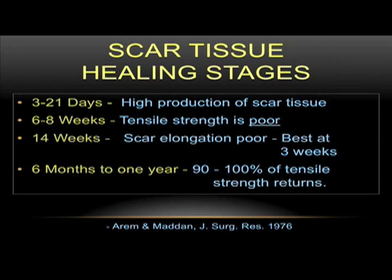In scar healing, we get high production of scar tissue within the first 21 days — a very good time to do manual therapy to direct stresses into tissue so it lays down properly. Remember how the fibroblast spews out amino acids in both fibrous and non-fibrous elements. Around six to eight weeks the tensile strength of scar is poor, so we don't want to use force at that time. Using proper techniques without force, as taught in this course, allows you to work through this period without worrying about damaging recovery.